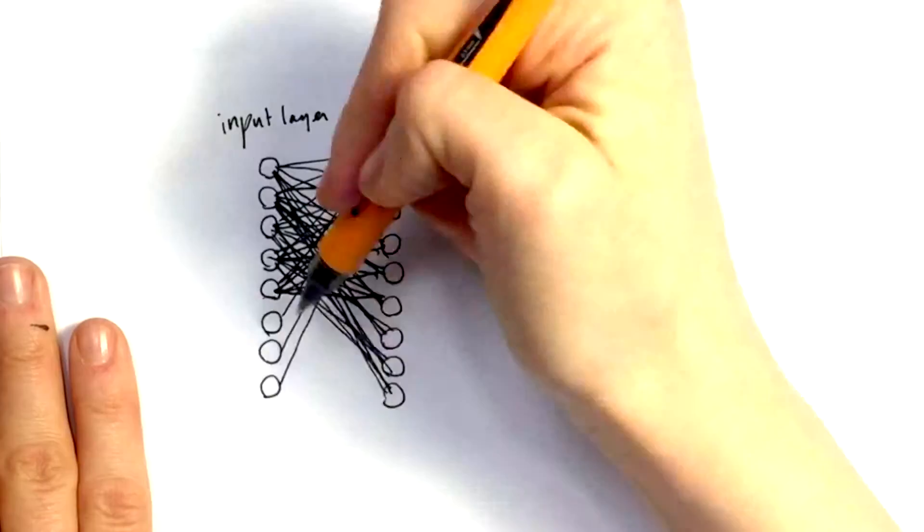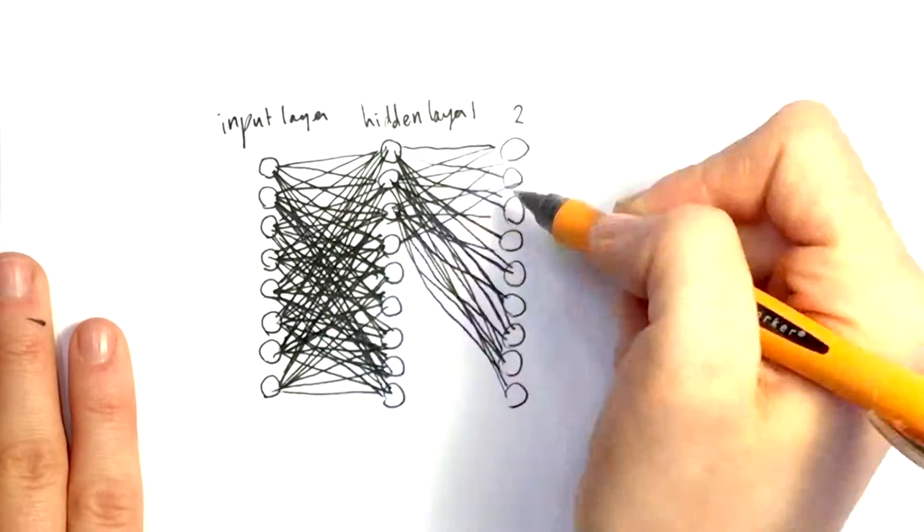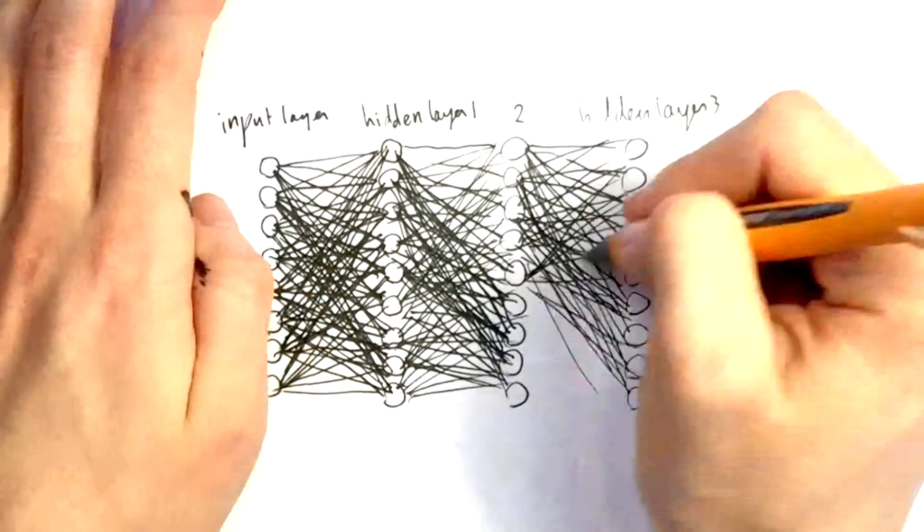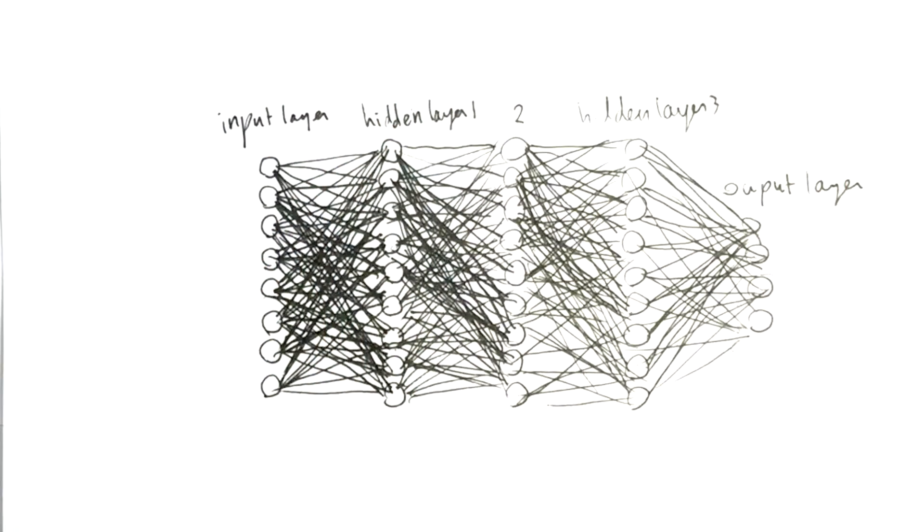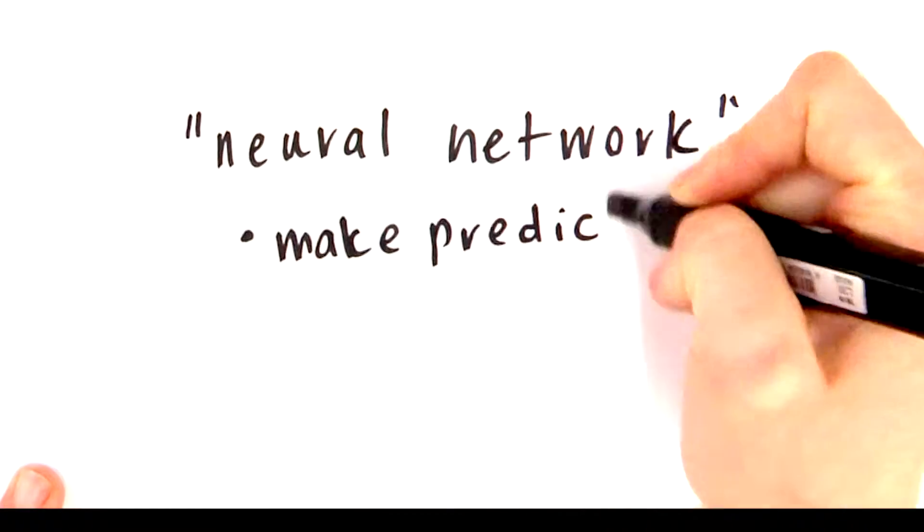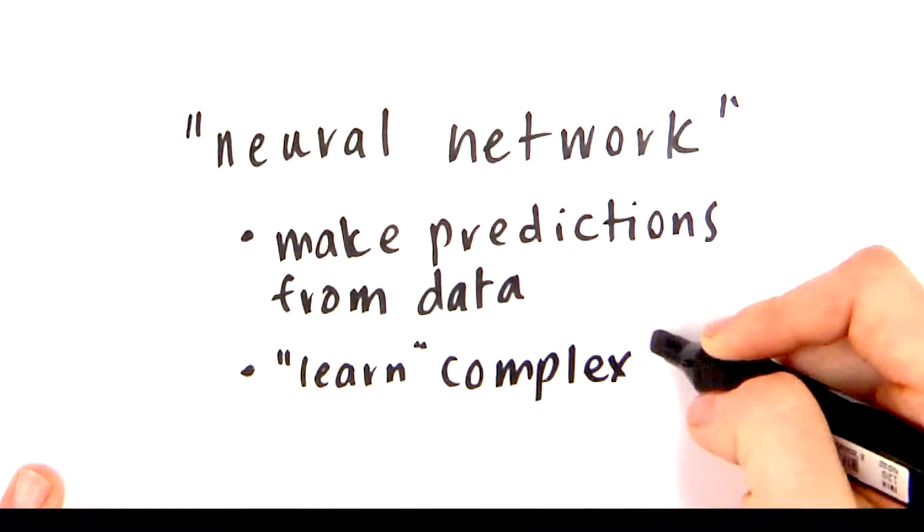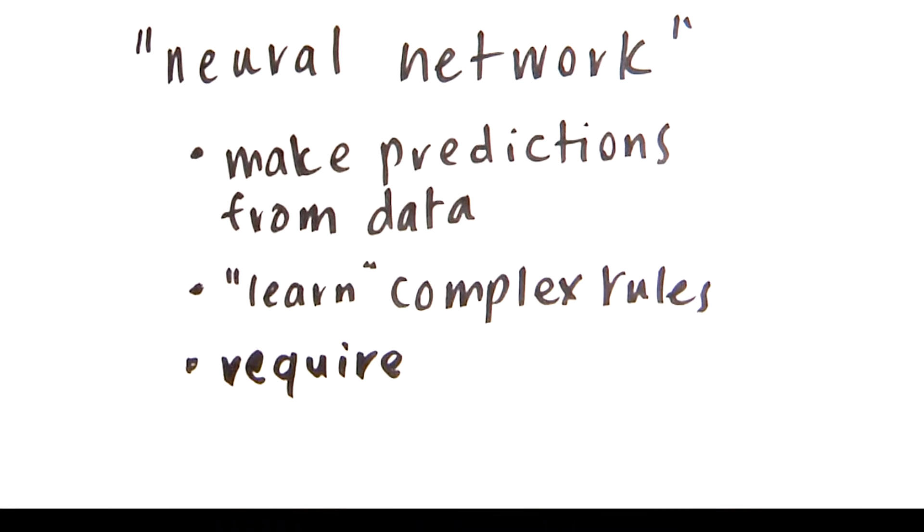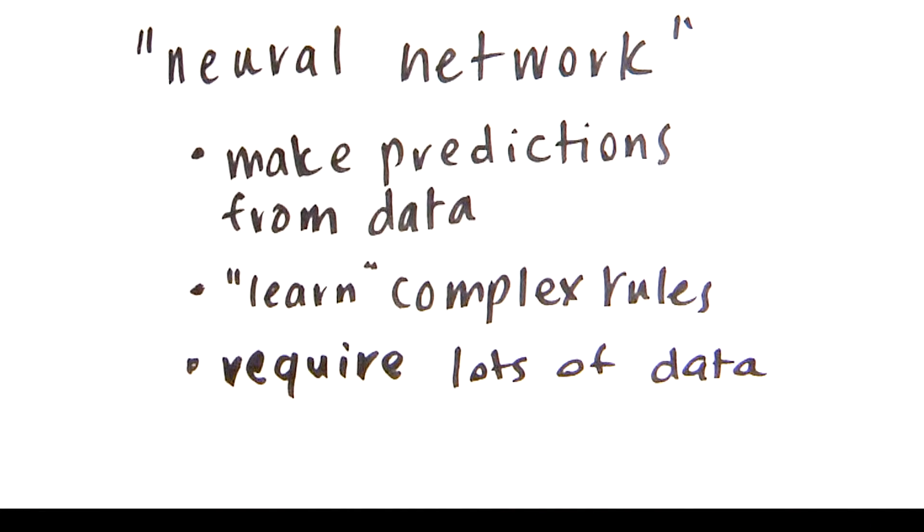One technique which has become popular recently is called a neural network. While this type of machine learning technique was originally inspired by how the brain works, neural networks do not actually mimic a brain. Like the other machine learning models we have discussed, neural networks are just another way to make predictions from data. They are powerful because they can learn extremely complex rules for making predictions, whereas other types of models learn far simpler rules.